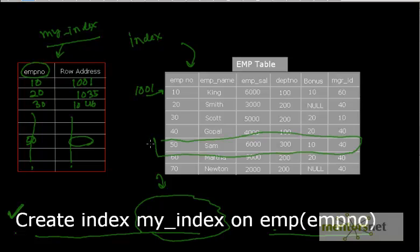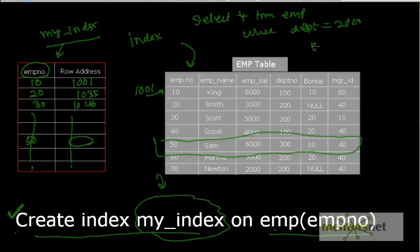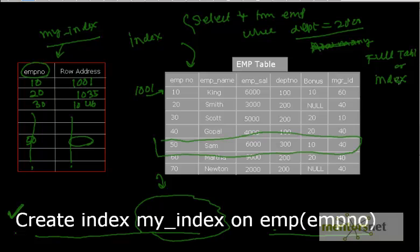Here's a question: if we give the query SELECT * FROM emp WHERE department_number = 200, and we have only created an index on employee_number, will Oracle use the index or do a full table scan? The answer is full table scan, because we have not defined an index on department_number — only on employee_number. The index is only used when searching on the indexed column.